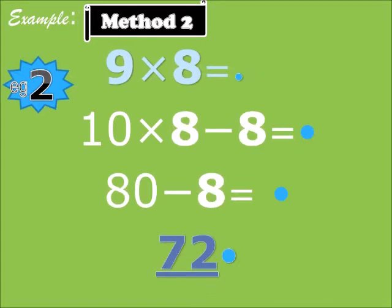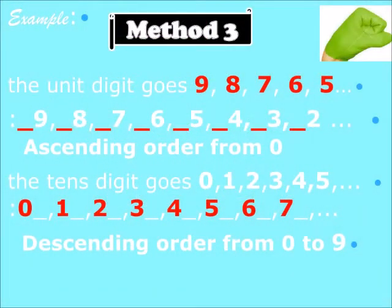Now we have Method Two, Example Two — nine times eight. Ten times eight means 80. Take away eight — that is 72. So nine times eight is 72. Nine times eight is ten times eight, 80, take away eight is 72.